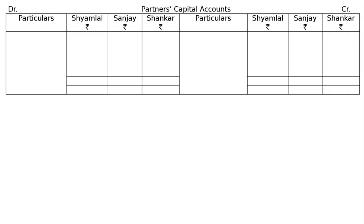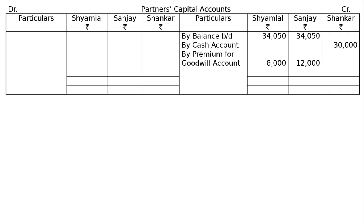Now, draw the capital account in proper format. Credit side: opening balance brought down is Rs. 34,050 for both partners. Sankar is to bring Rs. 30,000 as capital (by cash account) and Rs. 20,000 as goodwill, which is to remain in the business. Premium for goodwill of Rs. 20,000 is credited in the sacrificing ratio 2:3 — Rs. 8,000 to Samlal and Rs. 12,000 to Sanjay. Revaluation profit: Rs. 4,994 for Samlal and Rs. 7,491 for Sanjay.